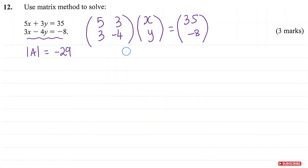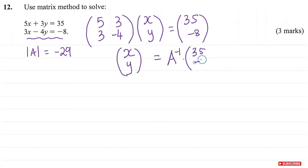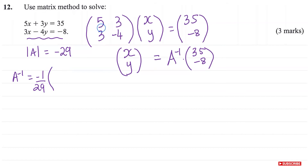Going back, we're going to have x and y on this side, and on the other side we have the inverse matrix — A inverse multiplied by the matrix 35, negative 8. We know the determinant of A is negative 29, so A inverse is going to be negative 1 over 29. Then we take matrix A, swap the numbers on this diagonal — so we get negative 4 and 5 — and change the sign of the other numbers: negative 3 and negative 3. So this is the inverse of matrix A.